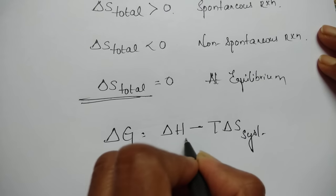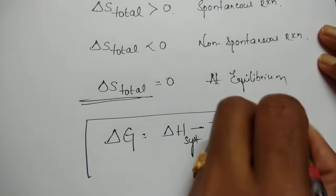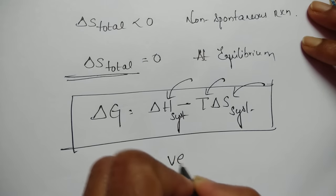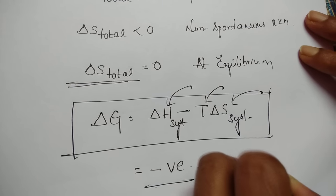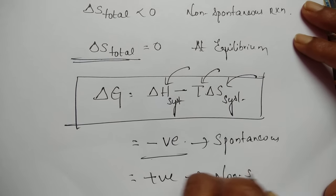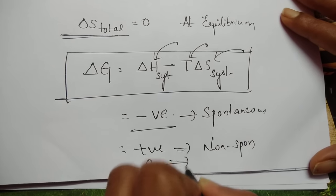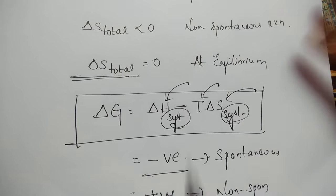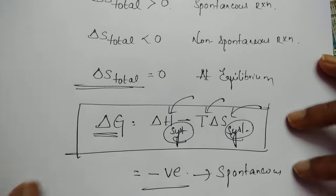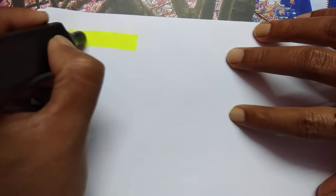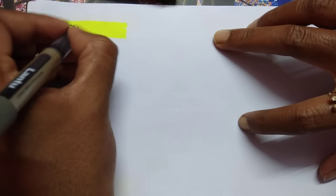But it is difficult to calculate both system and surroundings entropy, so we use Gibbs energy: ΔG = ΔH - TΔS. Here we use only system entropy and system enthalpy. If ΔG < 0, the reaction is spontaneous. If ΔG > 0, the reaction is non-spontaneous. If ΔG = 0, the reaction is at equilibrium.